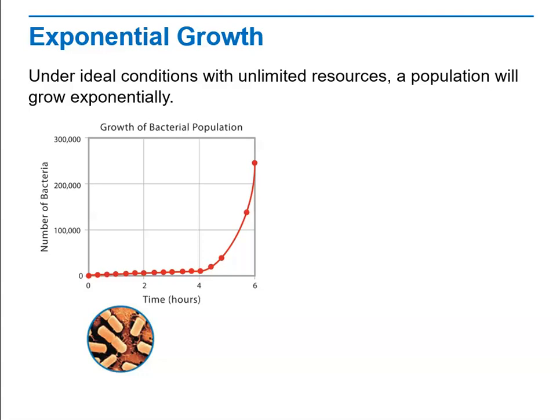If you plot the size of this population on a graph over time, you get what's called a J-shaped curve. Write that in your notes. A J-shaped curve is typical of exponential growth. The numbers rise relatively slowly at first, and then after a certain point they rise faster and faster. That highlighted area in the circle shows where the sharp increase really occurs. If nothing interferes with this kind of growth, the population will become larger and larger, faster and faster, until it approaches an infinitely large size.